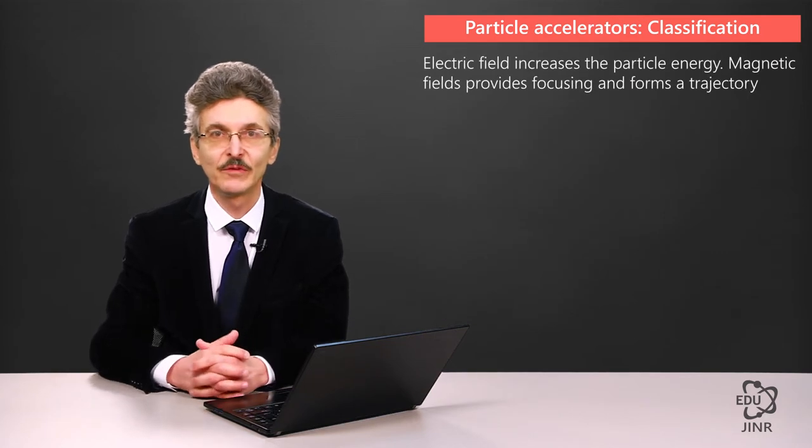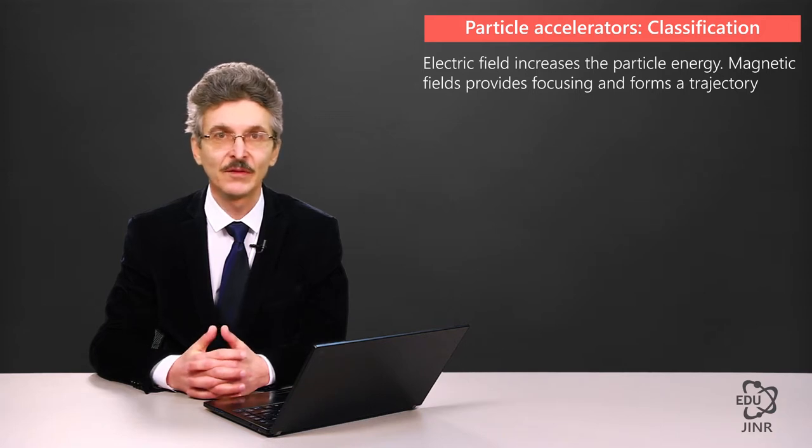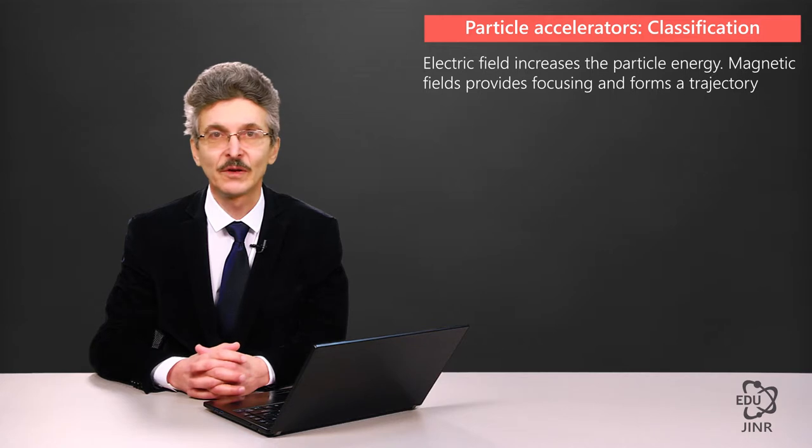An electric field is used to increase particle energy, while a magnetic field may be used to form the shape of the charged particle trajectory. Accordingly, the second major classification of an accelerator comes from its trajectory form.